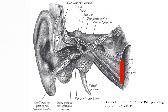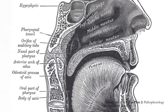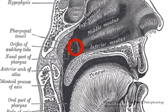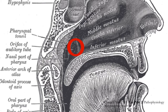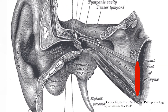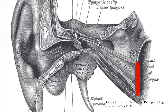First, how does your eustachian tube close? We know that the opening of the eustachian tube is in the posterior nasopharynx, and that's an area that's ripe for inflammation when you have something like an upper respiratory tract infection. That's probably how most eustachian tubes get closed — you have a cold or an upper respiratory tract infection that causes inflammation in your posterior nasopharynx, and that causes closure of the eustachian tube's opening.